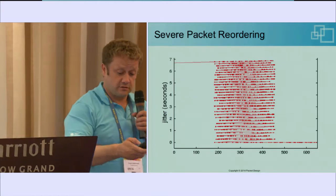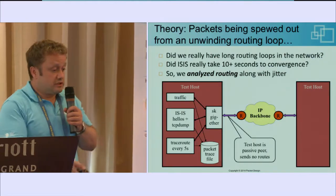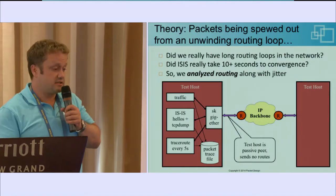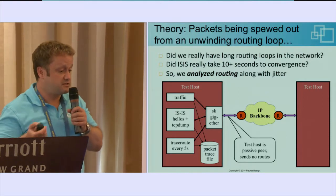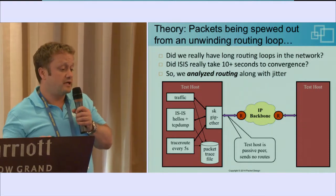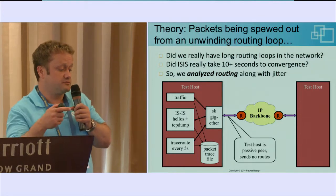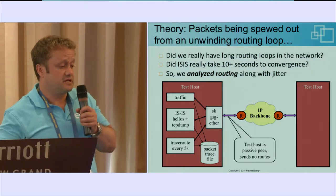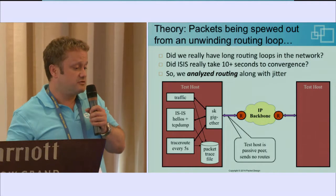So we built this system. We had a test system already sending traffic for jitter measurement. We added to that an ISIS engine that we ourselves developed. All of these networks were running ISIS. It didn't do much — all it did was establish an adjacency and send ISIS hello packets. As a result, it looked like a router to the rest of the routers, and we started receiving ISIS messages from the routers.